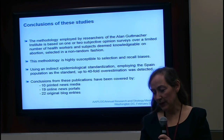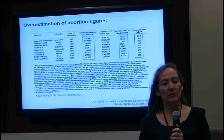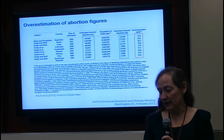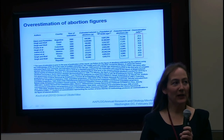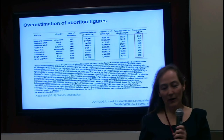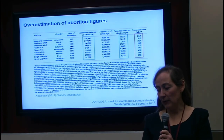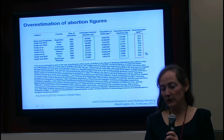This is critically important because these Guttmacher numbers represent figures presented to countries to demonstrate that they have a problem with unsafe abortion. This slide compares estimated induced abortions across Argentina, Brazil, Chile, Colombia, Guatemala, Mexico, Peru, and the Dominican Republic — contrasting what the Alan Guttmacher Institute obtains by selectively surveying health workers against the epidemiological standardization method comparing with Spain's population, which is the method employed in the Malisa paper by Dr. Koch and colleagues. The red box highlights the overestimation by the Alan Guttmacher Institute for these countries.